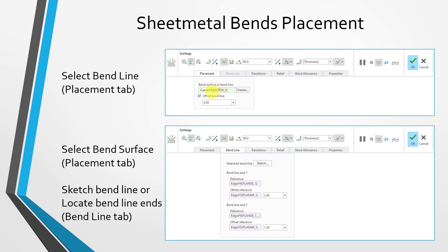Alternatively, from the placement tab, instead of selecting a bend line, you could select the surface you want to use. If you select the surface, then the bend line tab will be available. From the bend line tab, you can either sketch your bend line or use drag handles to locate both ends of the bend line on references and dimension it from additional references — so you have controls for both ends of the bend line.